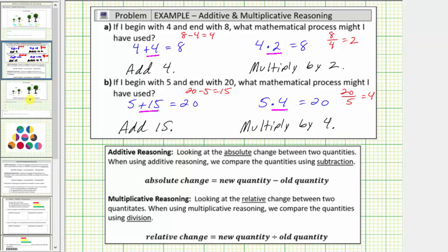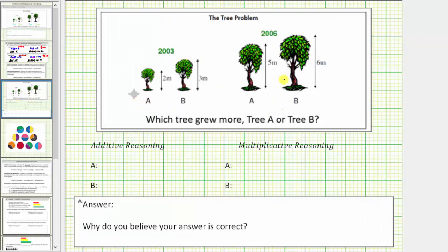Now let's go back to our tree problem and look at these heights using additive reasoning. For tree A, the height starts at two meters and increases to five meters. Five minus two equals three, so using additive reasoning, the process is add three. For tree B, the height goes from three meters to six meters. Six minus three equals three, so the process is also add three. Using additive reasoning, both trees have grown three meters.